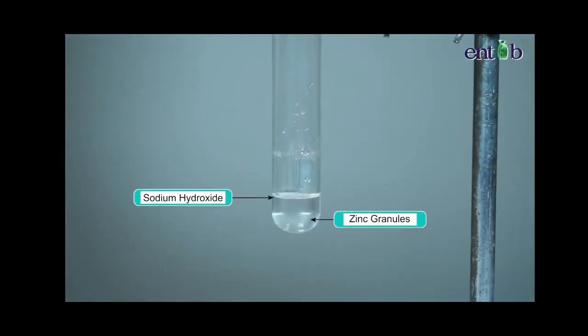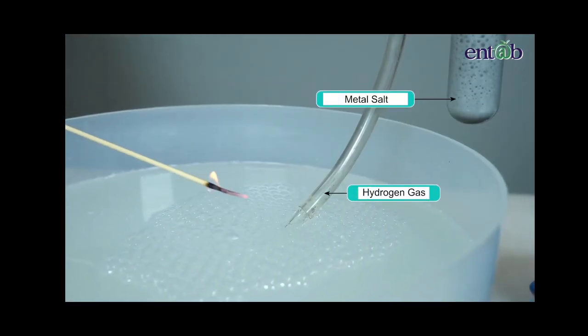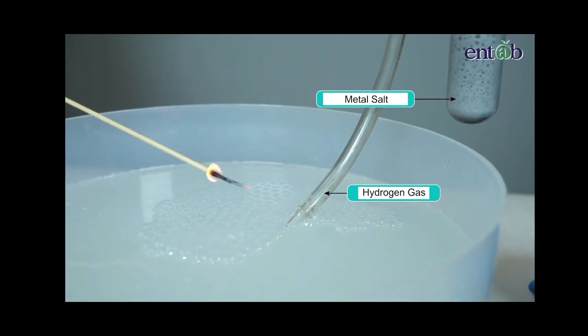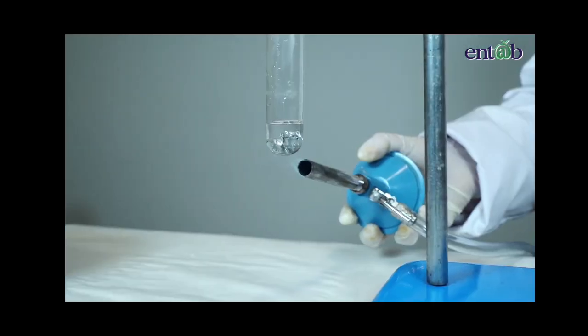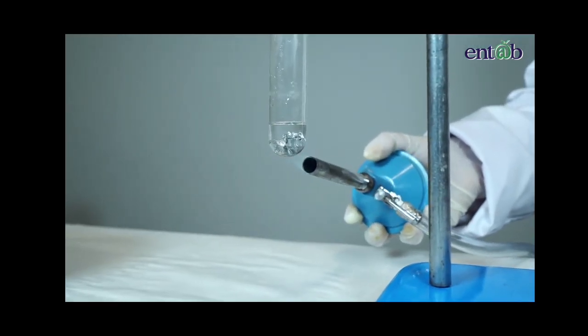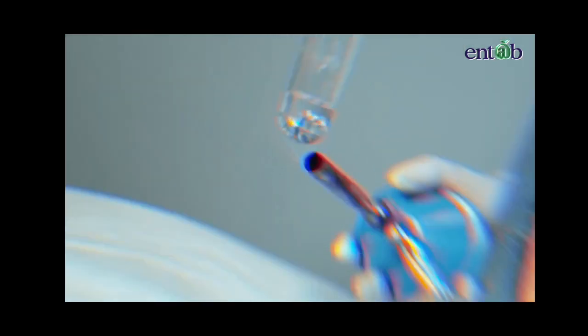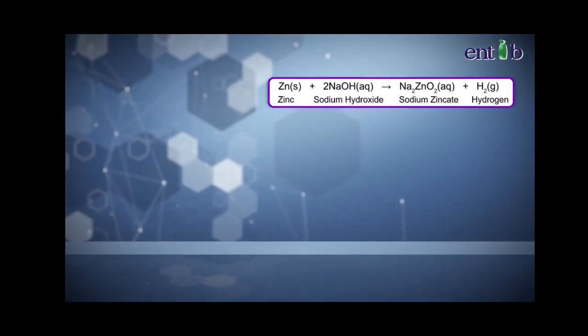When zinc reacts with a base like sodium hydroxide, hydrogen gas along with the metal salt is obtained. But to carry out this reaction, we need to warm the reaction system. The balanced chemical equation can be written as shown.